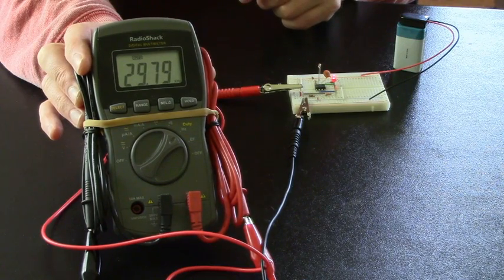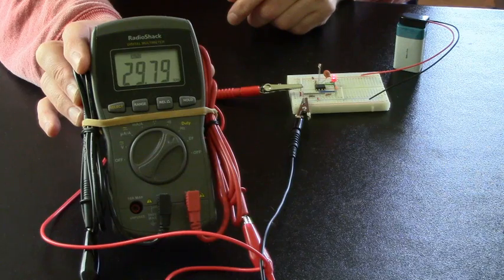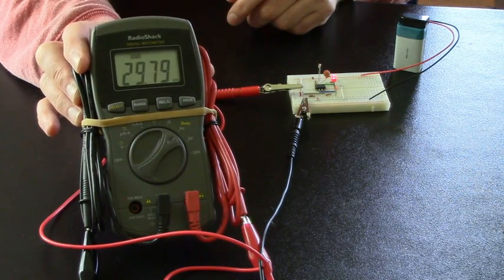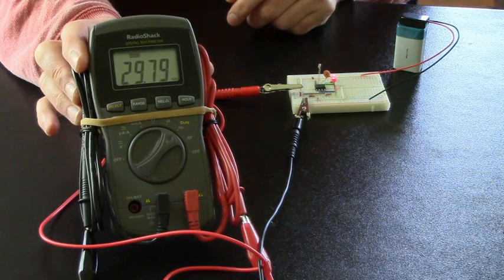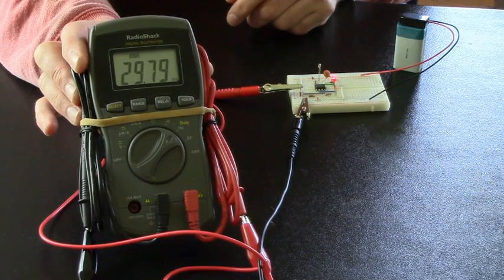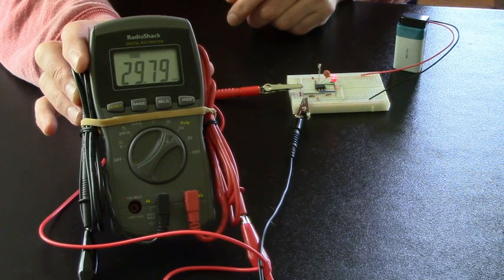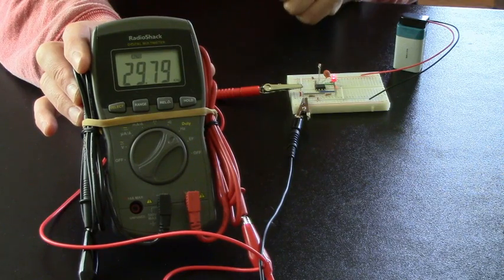Hulda Clark defines a zapper from anywhere from 10 hertz to 500,000 hertz. And she chose 30,000 because it was the most comfortable to zap at. You really don't feel a thing. Lower frequencies you would feel. So if you were to zap at like 1000 hertz or something like that, you would feel the tingle. And some people find that very uncomfortable.